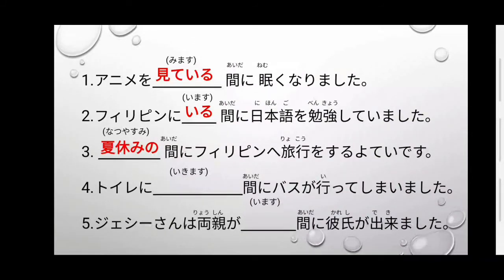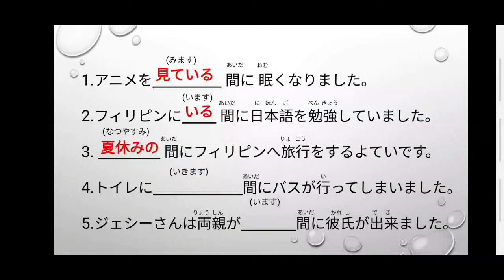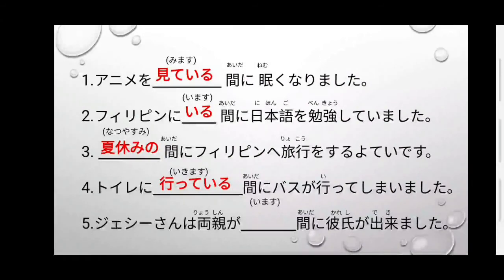Yonban. Toire ni [blank] aida ni, basu ga itte shimaimashita. Toire is a toilet or CR, basu is a bus. Itte comes from the verb ikimasu — when made into te-form it becomes itte; to make present progressive, ikimasu becomes itte iru. So: Toire ni itte iru aida ni, basu ga itte shimaimashita. In English: While he or she was on the way to the CR, the bus left.